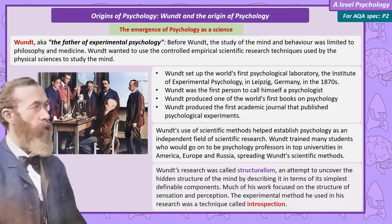In his own research, Wundt was particularly interested in the structure of sensation and perception. Wundt's approach to research in these processes was called structuralism — describing the mind in terms of its simplest, definable components. After identifying these separate components, he would try to explain how they fit together, in an attempt to uncover the hidden structure of the mind.